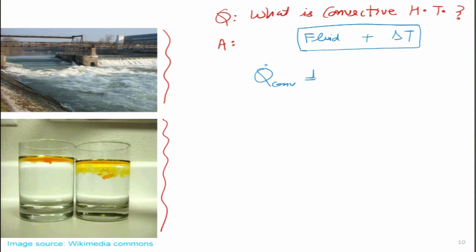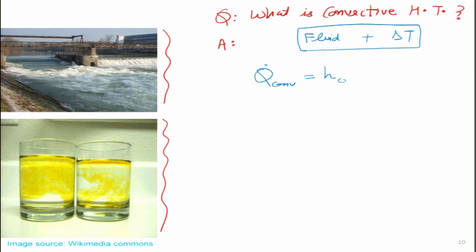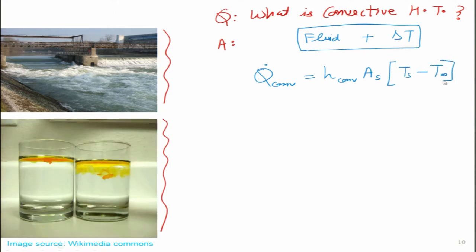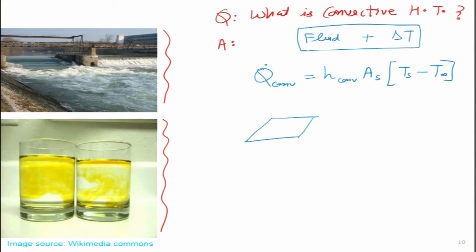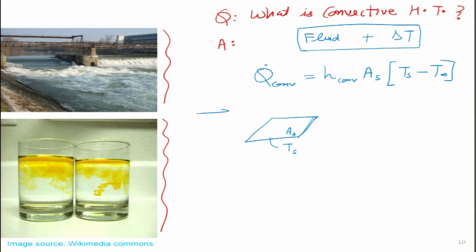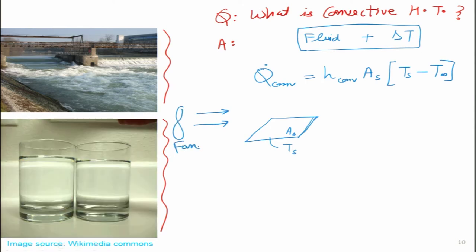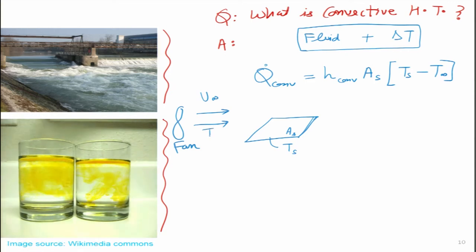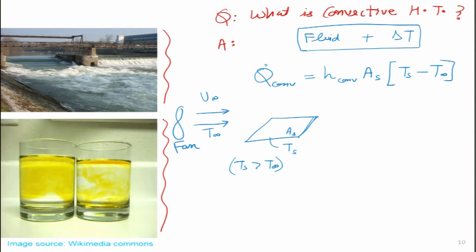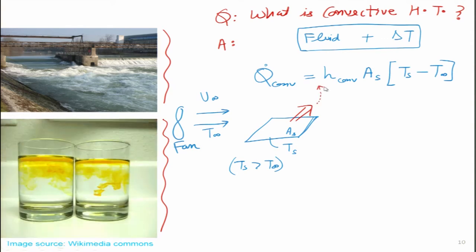In equation form, the convective heat flux q̇_convection equals the convective heat transfer coefficient h multiplied by the surface area and the temperature difference between the surface and the ambient fluid. Graphically, if a surface of area A_s at temperature T_s is surrounded by a fluid moving at velocity U_∞ and temperature T_∞, then if T_s > T_∞, this surface will lose heat as convective heat transfer. For convection to take place, we need a solid surface surrounded by a fluid in motion.